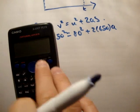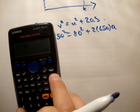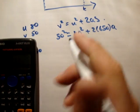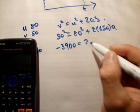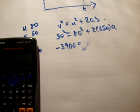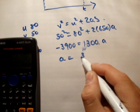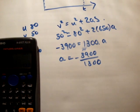So let's pull out the calculator. Here, 80 squared minus 50 squared is equal to 3900. 2 times 650 multiplied by 2 is 1300, therefore a is equal to 3900 over 1300 with a negative sign.